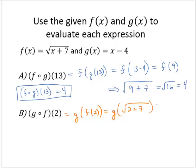And so that would be g of the square root of 9. That would be g of 3. g of 3 is 3 minus 4, which is negative 1. So then g compose f of 2 is negative 1.